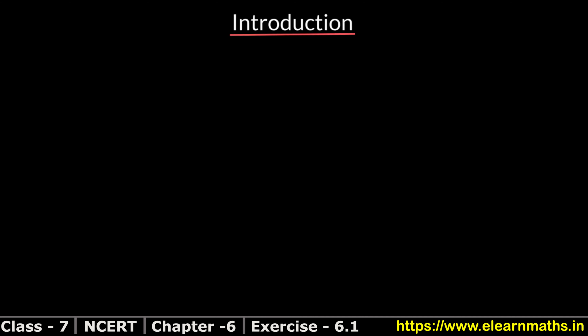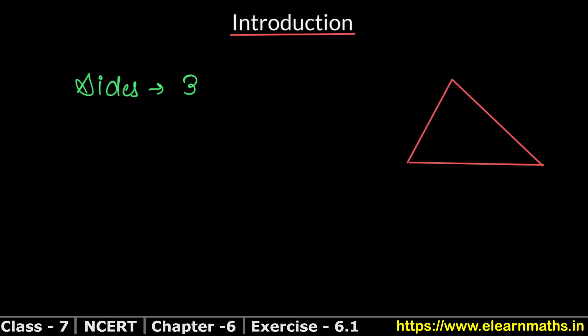Let's start. Now we will know what is a triangle. A triangle is a closed figure which has three sides. These three sides are named as line segment AB, line segment BC, and line segment CA.